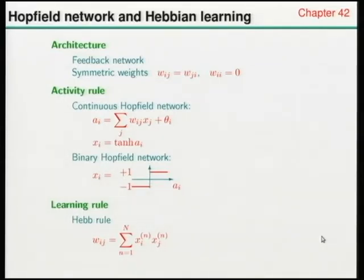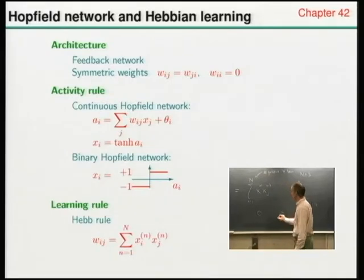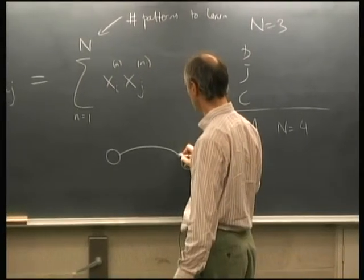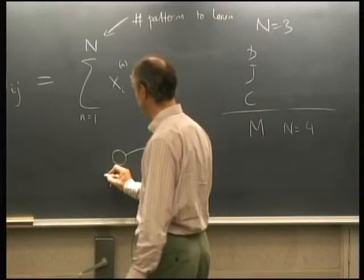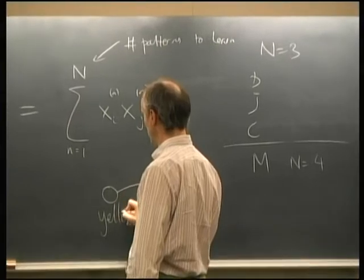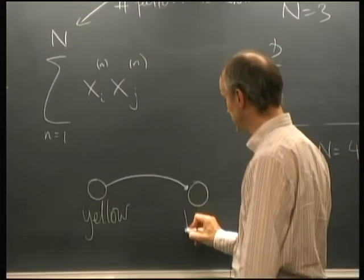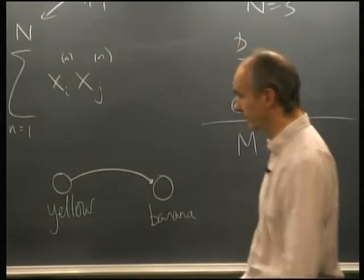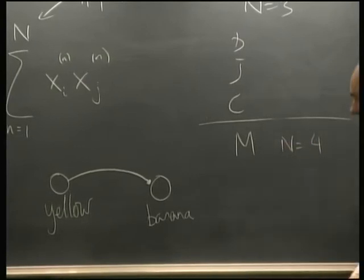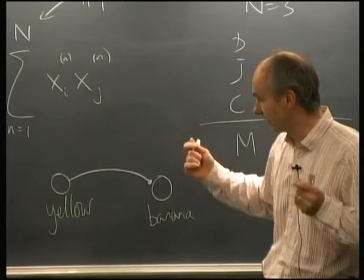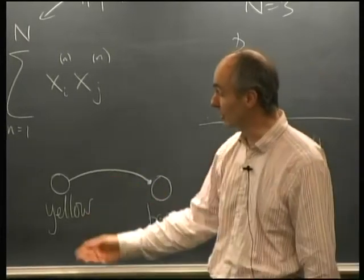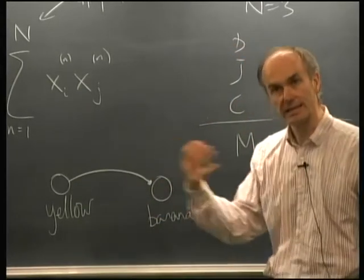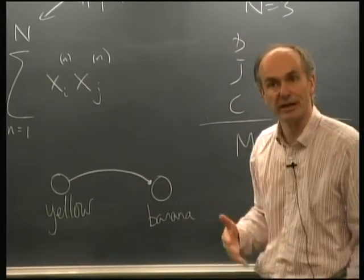This is called the Hebb rule, named after Donald Hebb. The biological idea is: if two neurons are connected and respond in a correlated way to stimuli, that connection strengthens in proportion to their correlation. For example, if one neuron responds to yellow things and another to banana smell, and those co-occur in the world, the synapse between them strengthens — so seeing a yellow thing might later trigger a banana smell association. That's Hebbian learning.